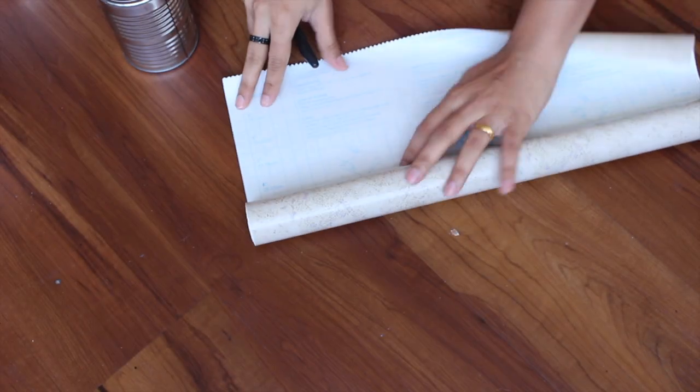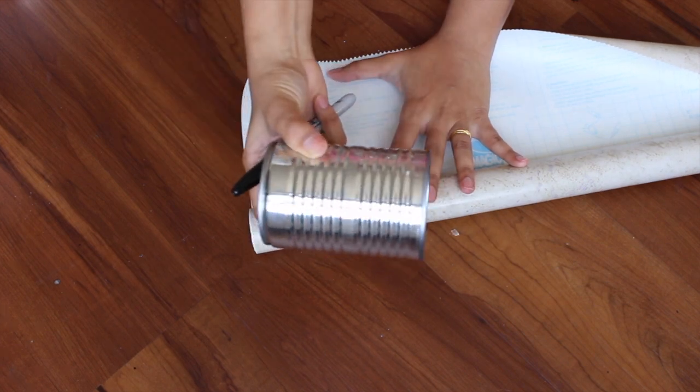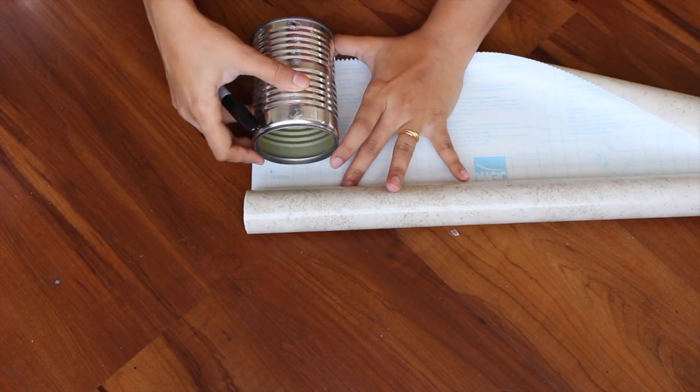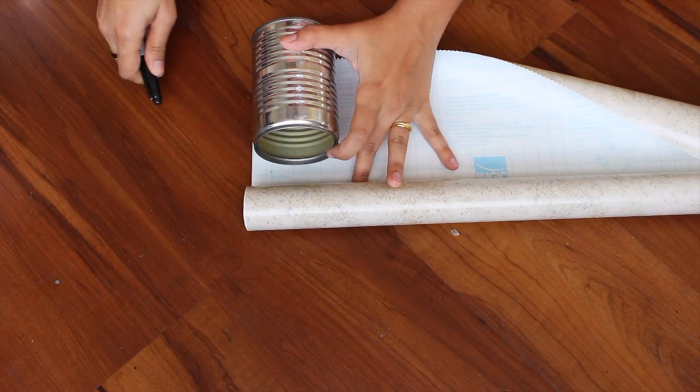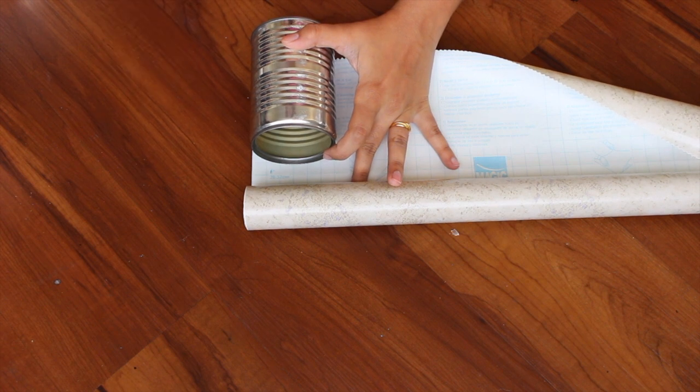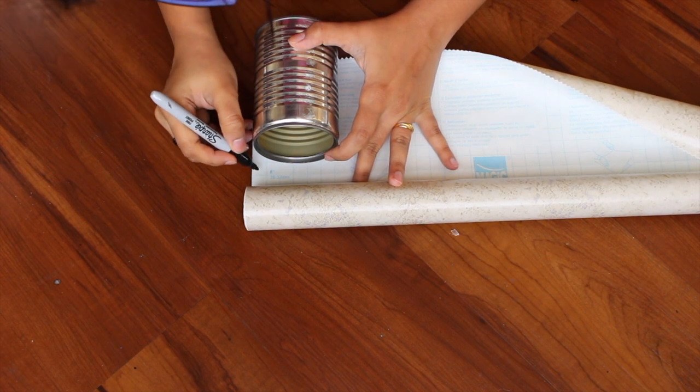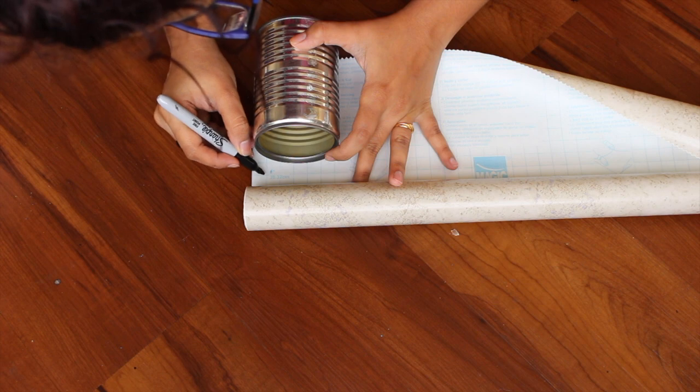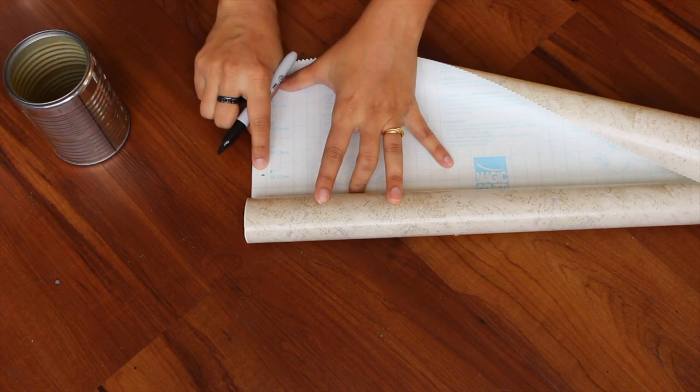All you have to do is measure the contact paper according to your tin can, as you can see what I'm doing here. Please don't mind my head in between, haha!